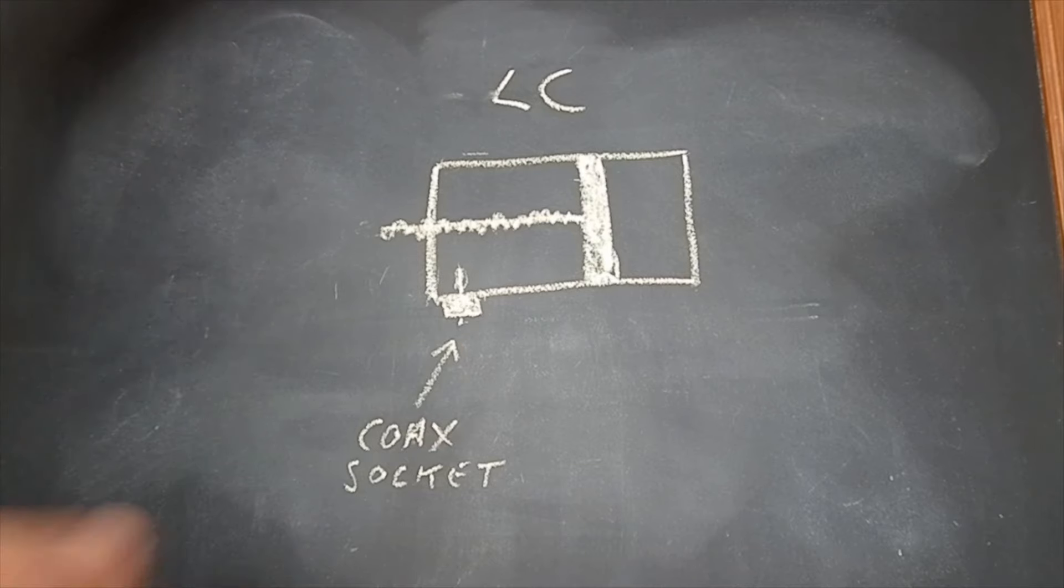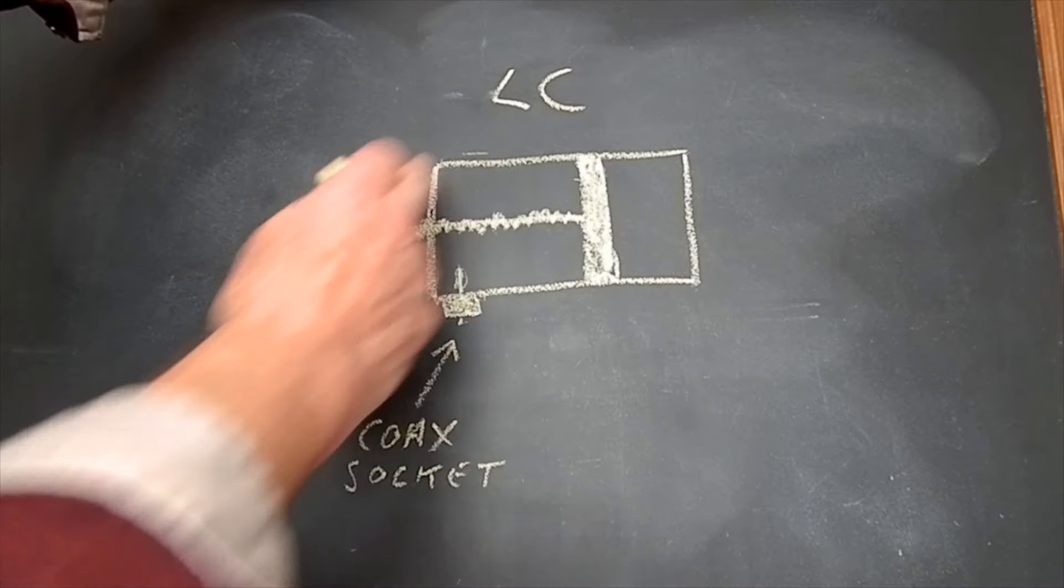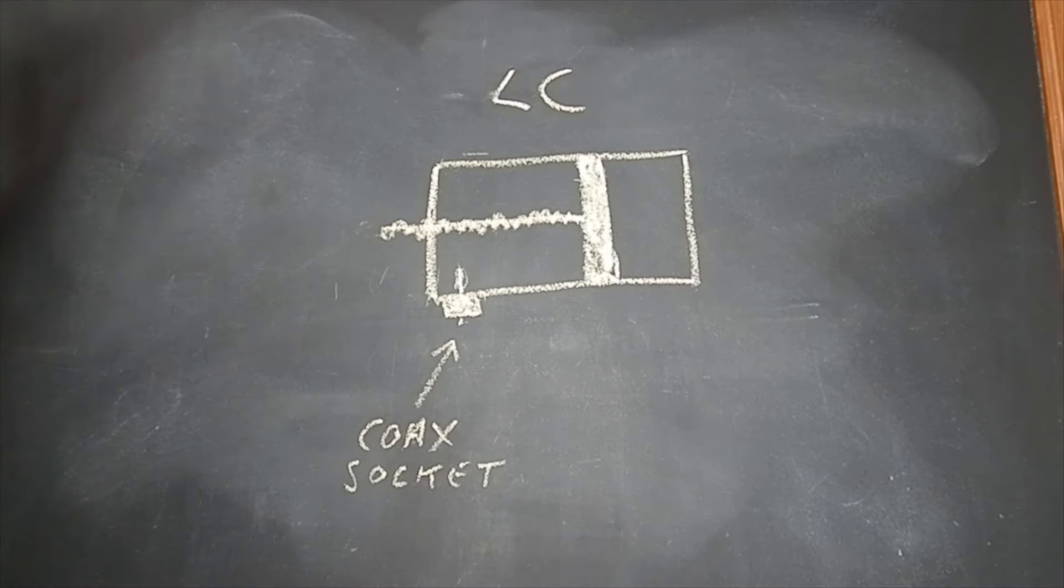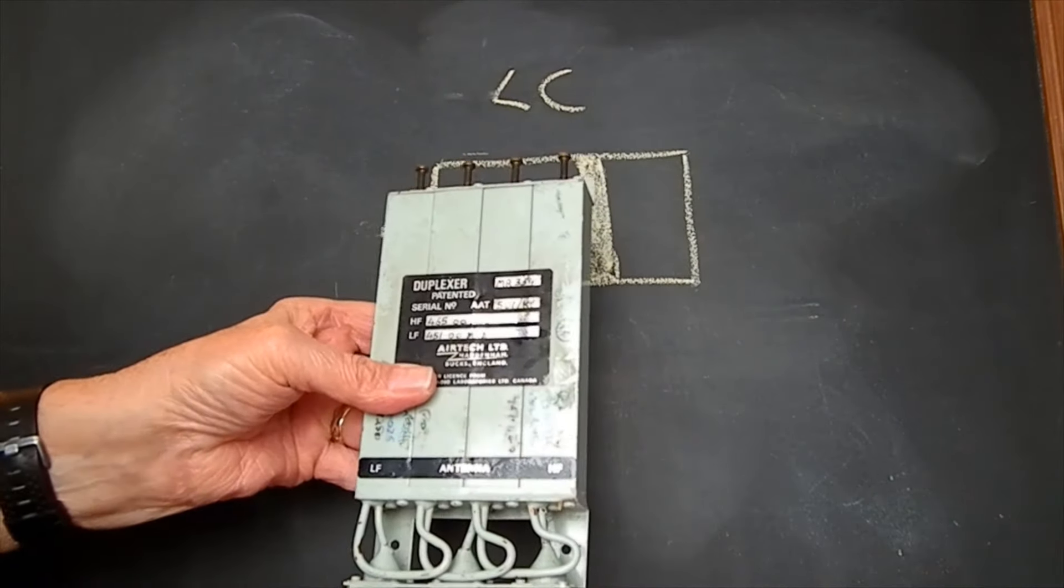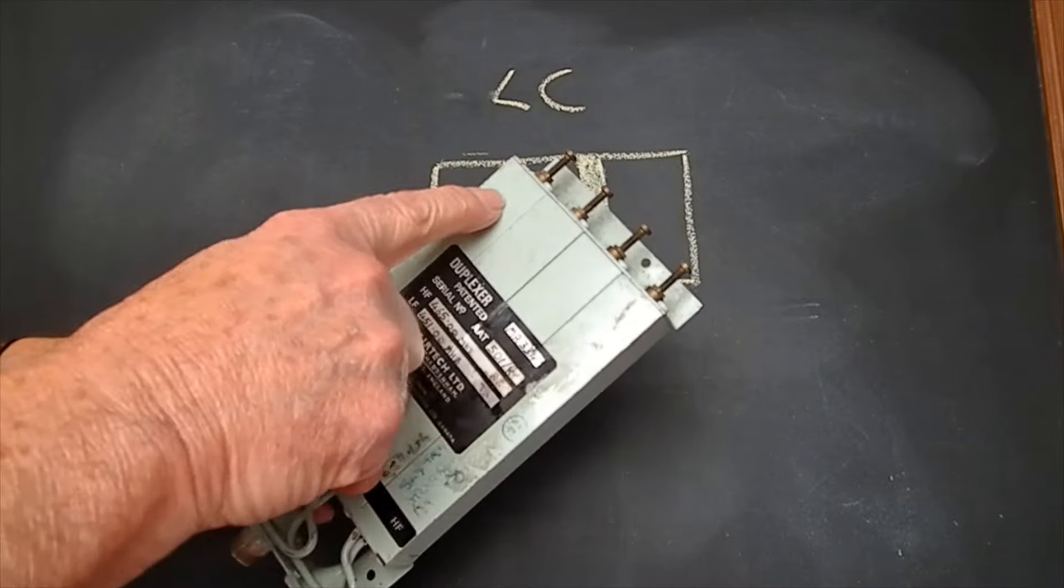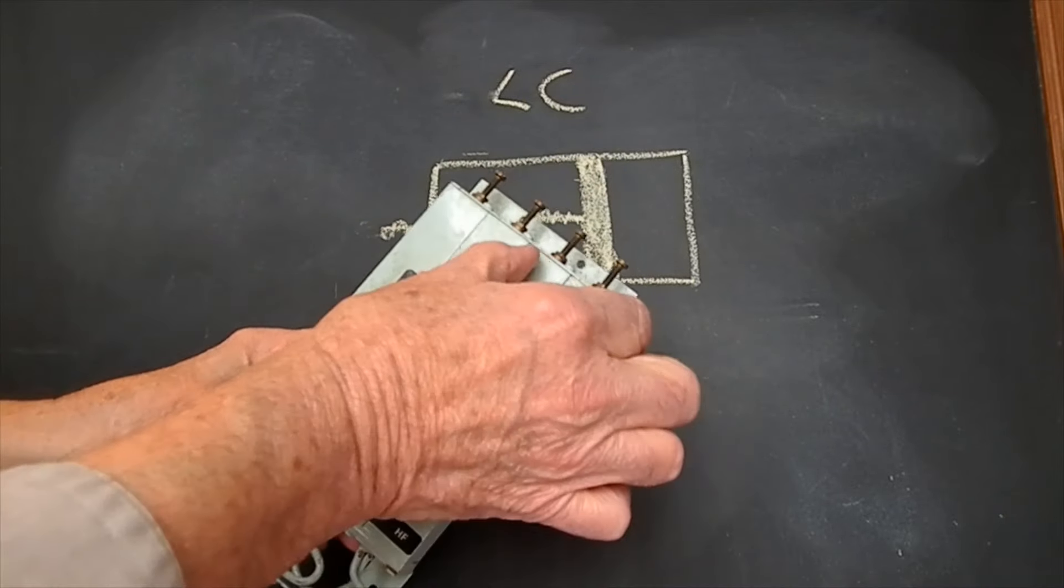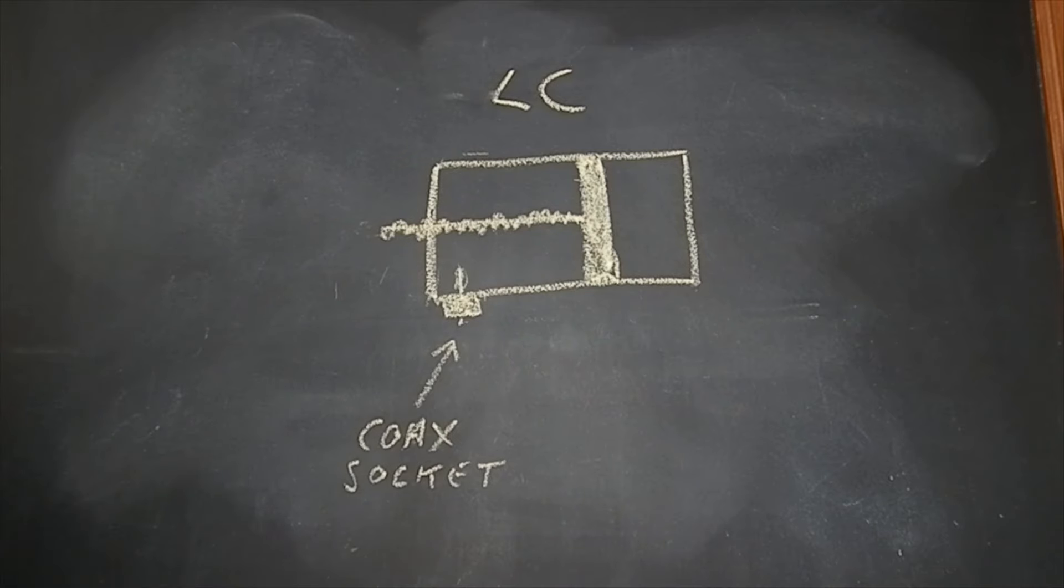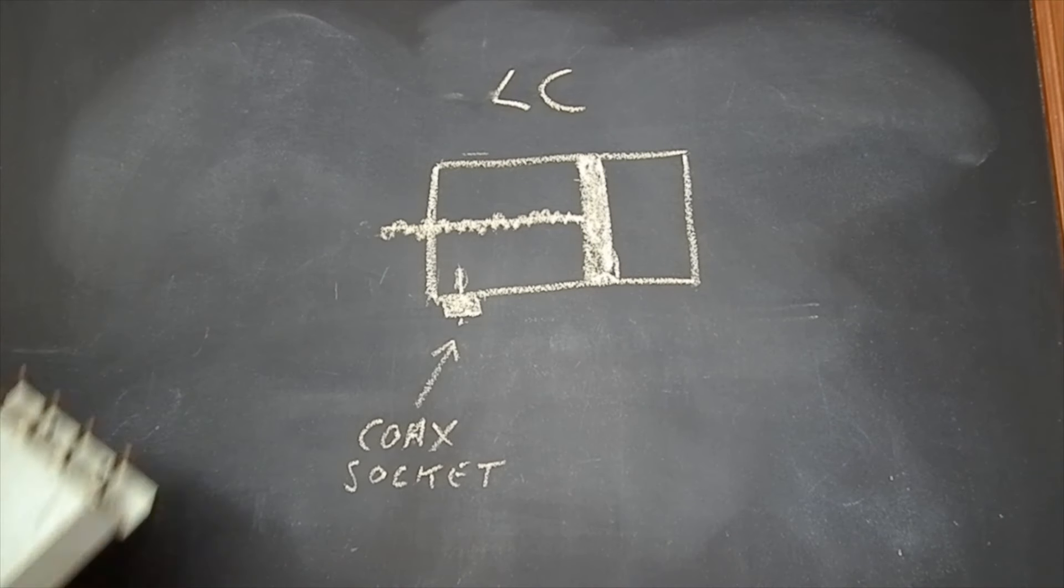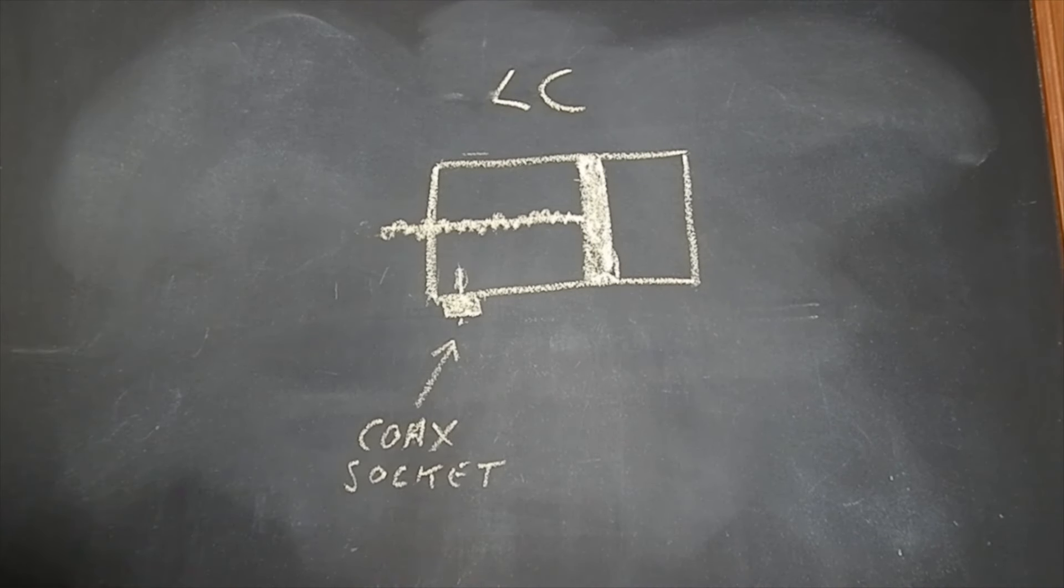Now 30 dB isn't enough. You'll still get a lot of signal coming through. So what you do is have two of these on the receive side. So for example there's one, two, three, four. So two of these on the receive side, that gives us 60 dB attenuation.